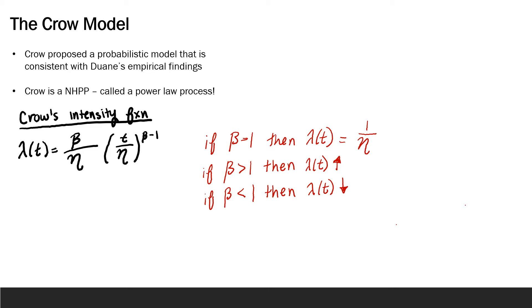And in this last case, where β is less than one, if the intensity function or our failure rate is decreasing, then we have reliability growth. Now, if you do the math, what you find is that for a power law process, Duane's relationship holds. For data that are well described by a power law process, there is a linear relationship between the log cumulative failure rate and the log cumulative time, which we can visualize through the graph we showed for Duane.